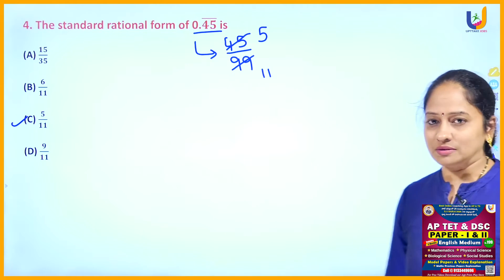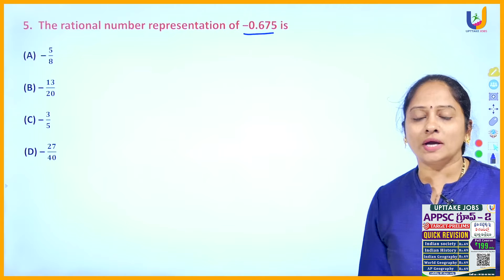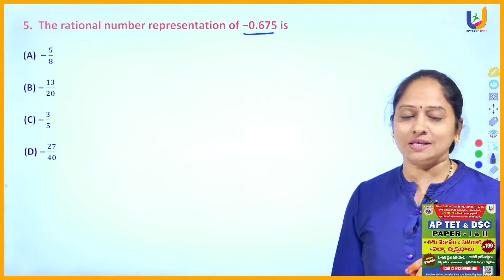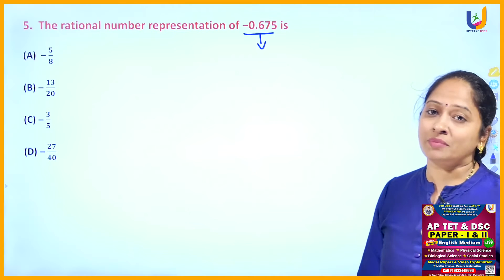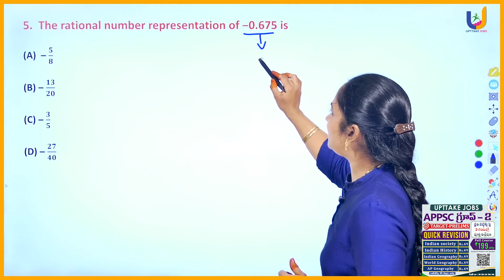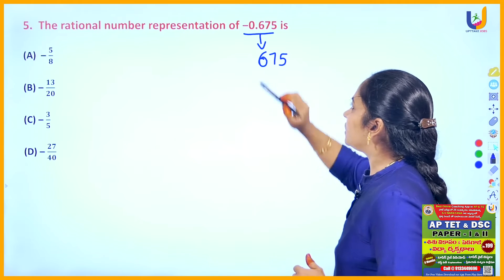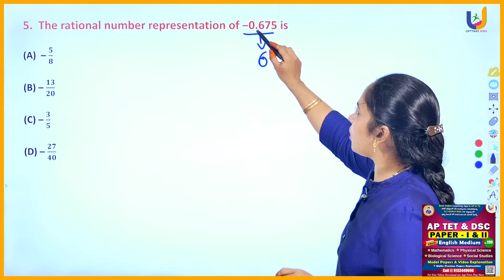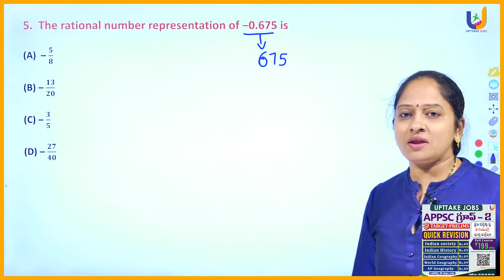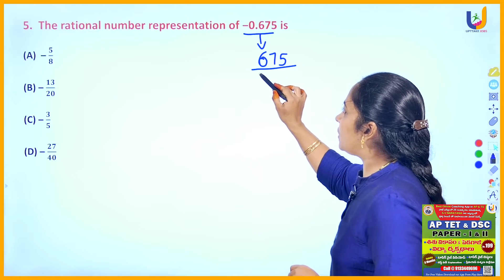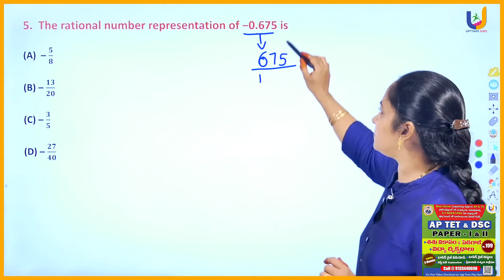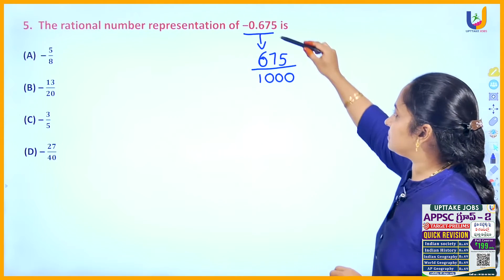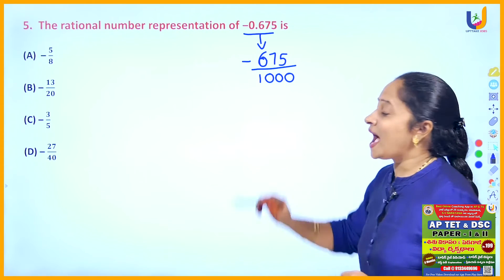Option C is the answer. Next: the rational number representation of minus 0.675. This is a terminating decimal because it has a finite number of decimal digits. To convert, ignore the decimal point and write the non-zero digits as the numerator — the digits are 675. For the denominator, write 1 followed by as many zeros as there are decimal digits. There are 3 decimal digits, so the denominator is 1000. The rational form is 675 by 1000 and the negative sign carries through.